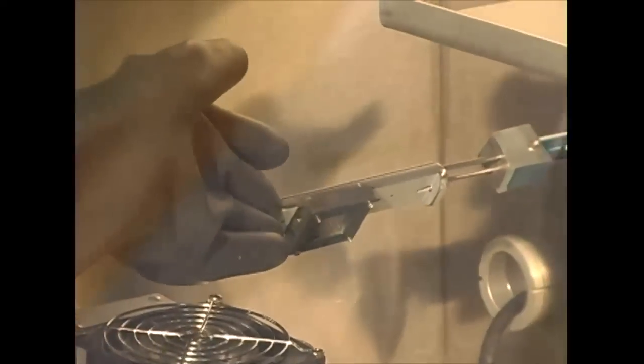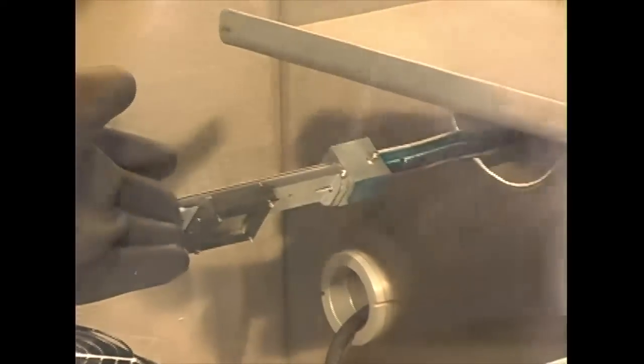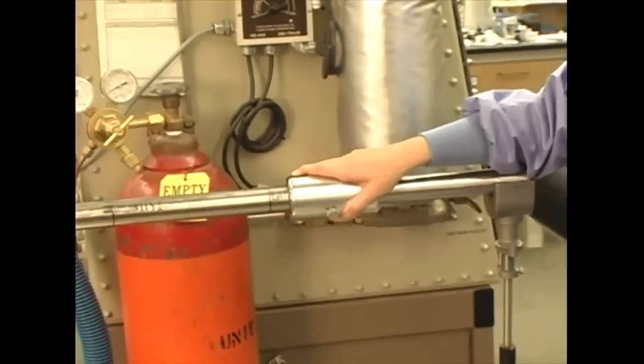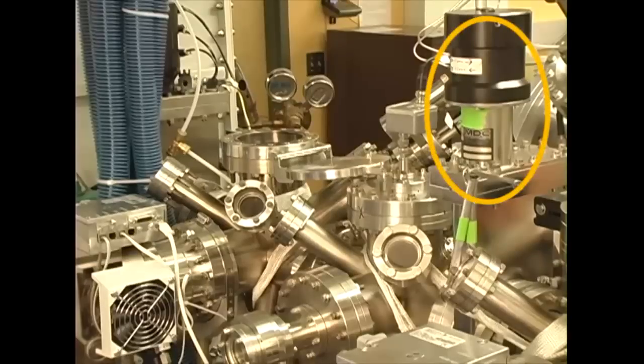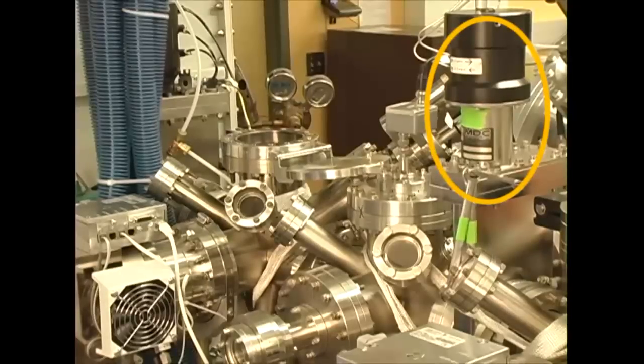The sample boat is loaded onto the extendable arm. The arm and boat are drawn into the vacuum portion of the apparatus. The gate valve is closed and the system is ready to be evacuated.